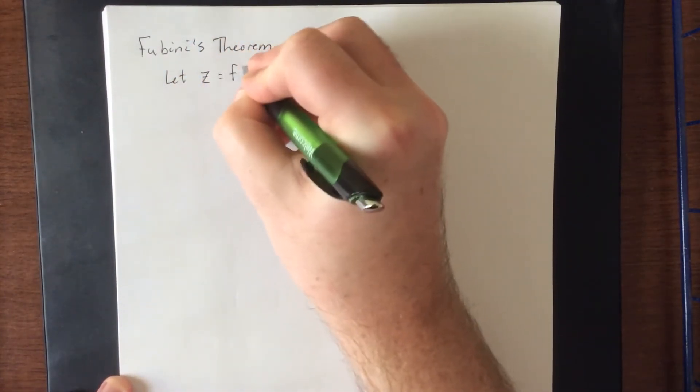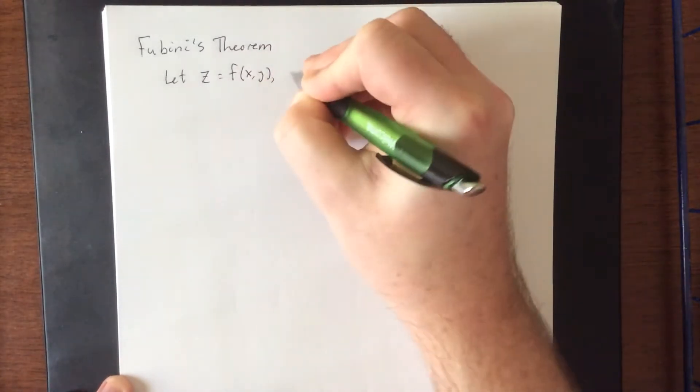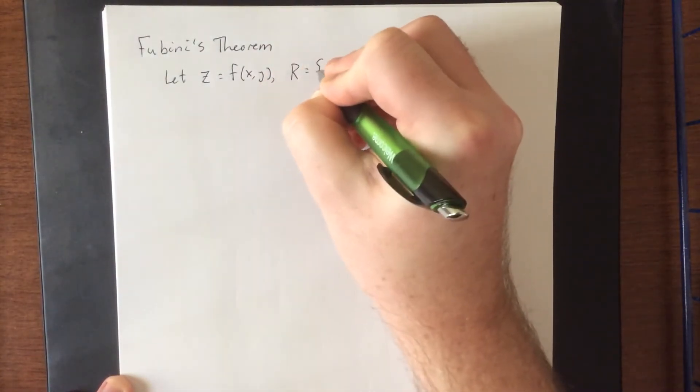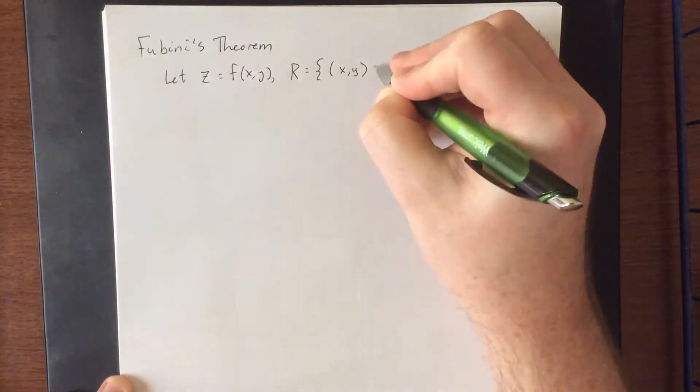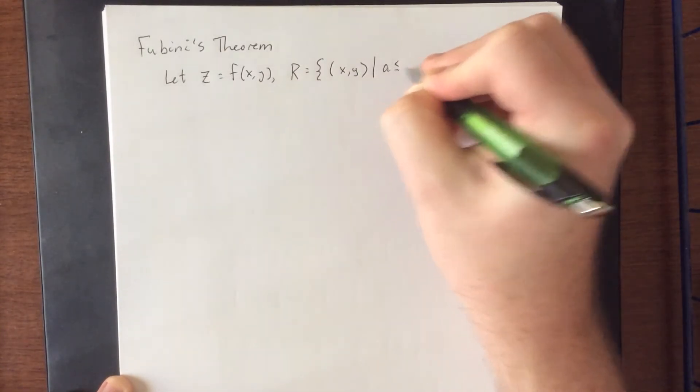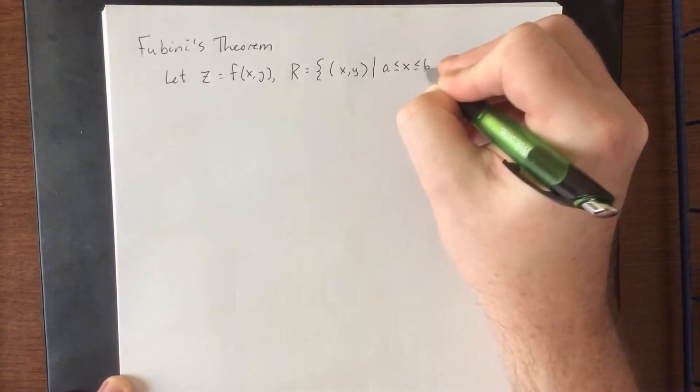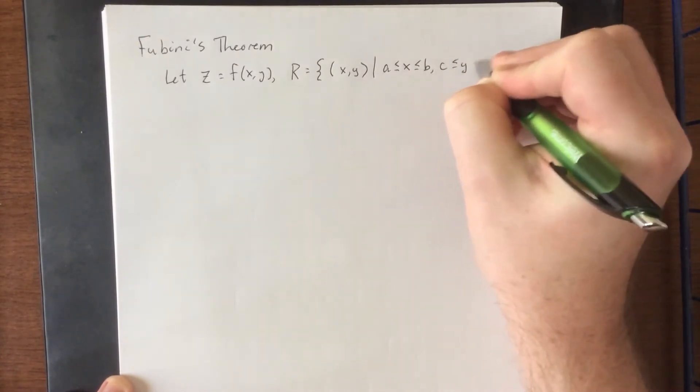Suppose that we have z as a function of x and y, and we have a rectangle defined as the set of all ordered pairs (x,y) such that x is between a and b and y is between c and d.